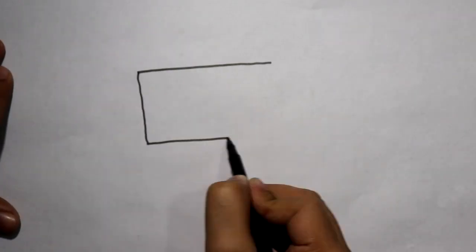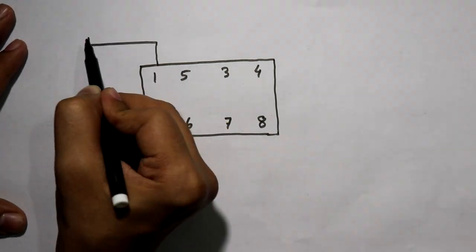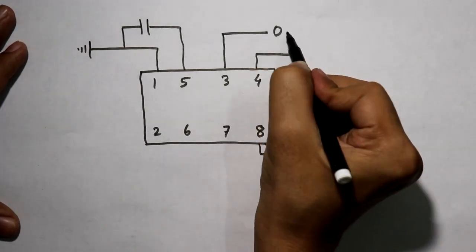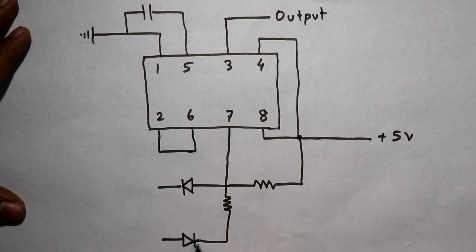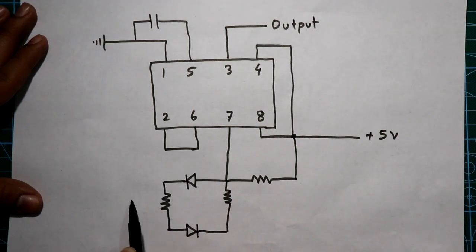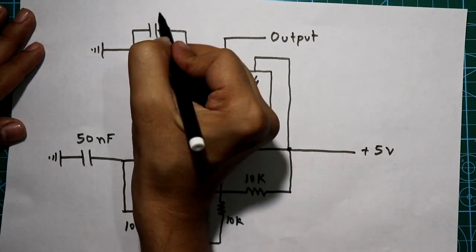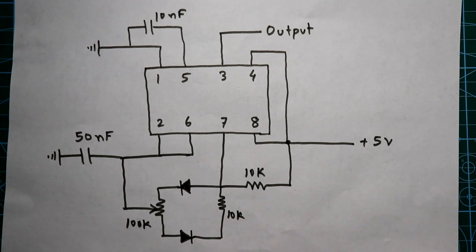To control a servo motor with the 555 IC, we need to connect the 555 in astable mode so that it can generate a PWM signal, because we know that a servo motor is controlled by a PWM signal. This is the circuit — the 555 in astable mode.